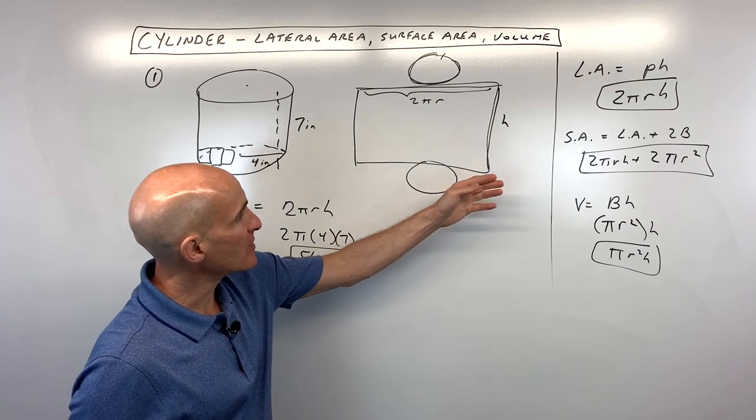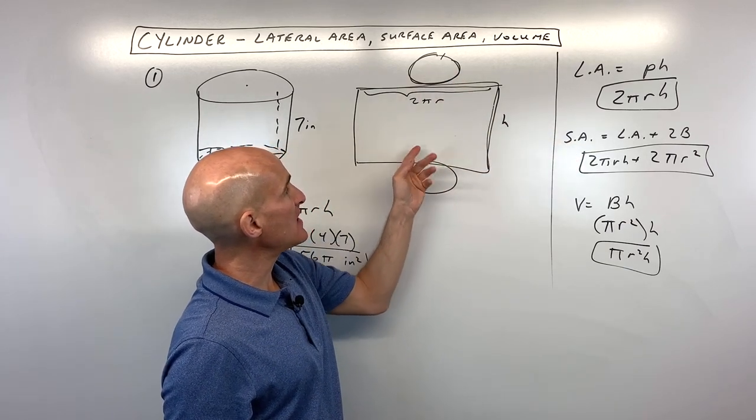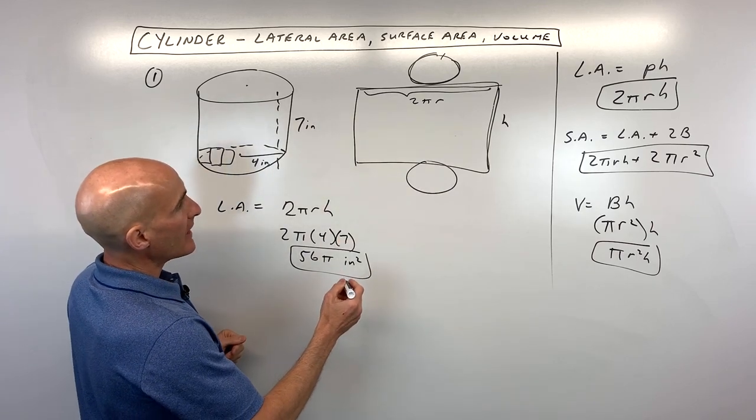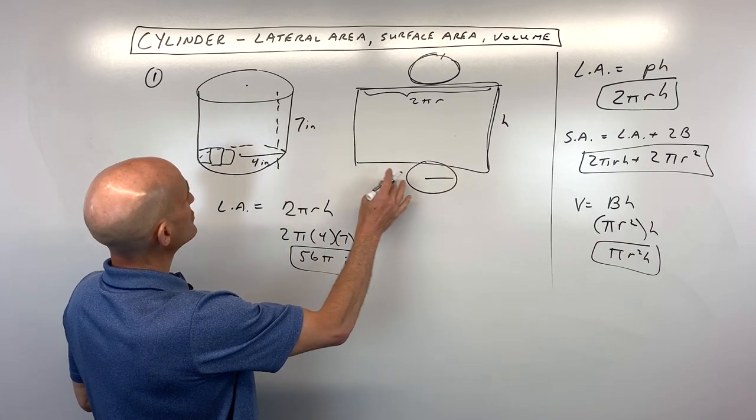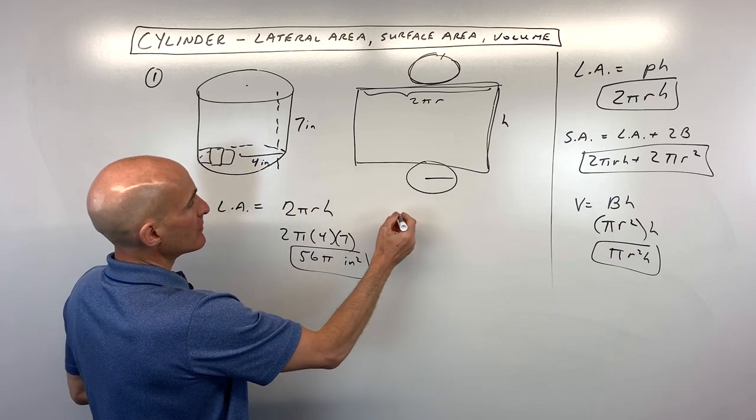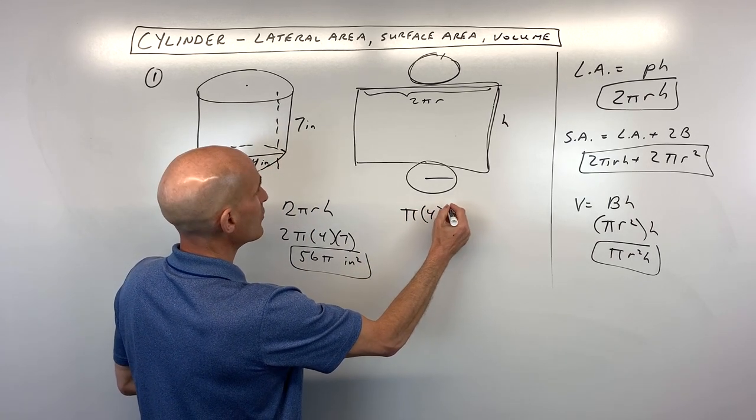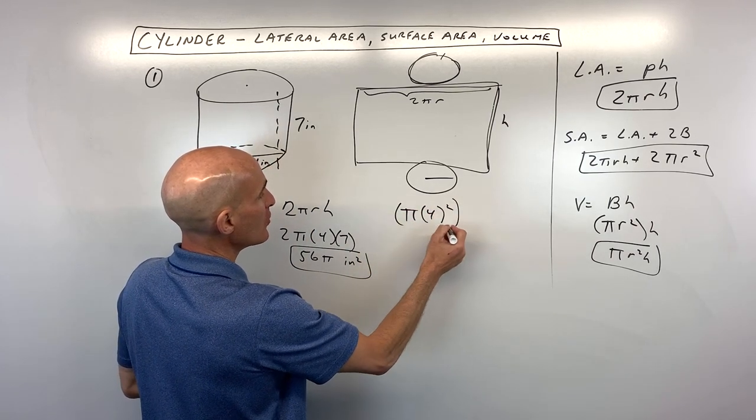So for surface area, now what we're going to do is we're going to add on these 2 bases in addition to the lateral area. So we've got area of a circle is πr², so that's going to be π times 4².